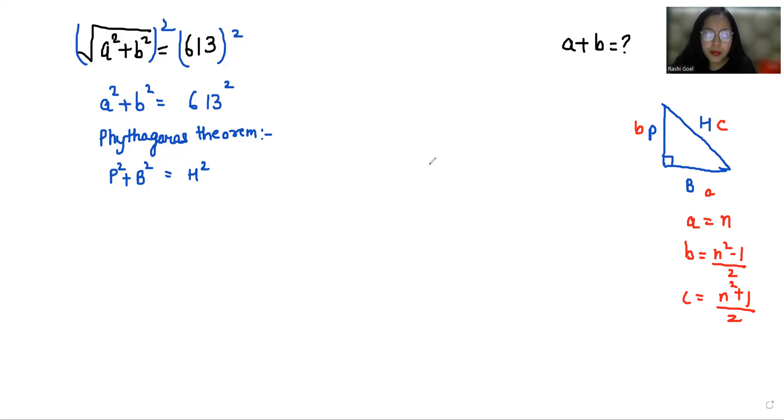Now p² + b² = h² and h is c. So I can replace a² + b² with c².